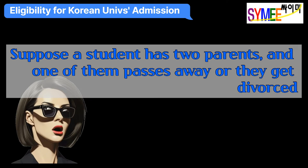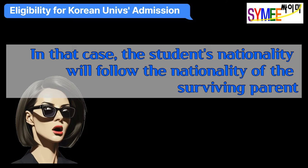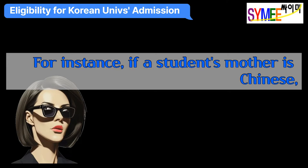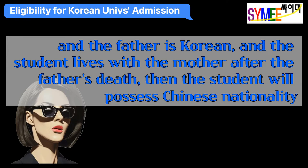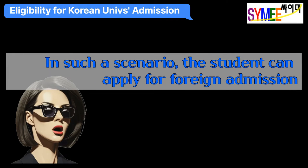Suppose a student has two parents, and one of them passes away or they get divorced. In that case, the student's nationality will follow the nationality of the surviving parent. For instance, if a student's mother is Chinese and the father is Korean, and the student lives with the mother after the father's death, then the student will possess Chinese nationality. In such a scenario, the student can apply for foreign admission.